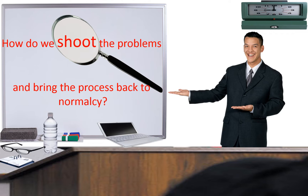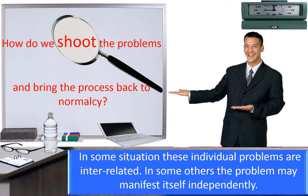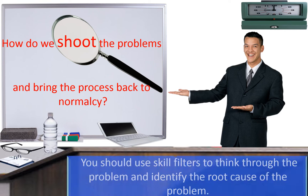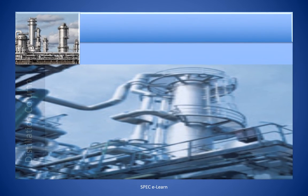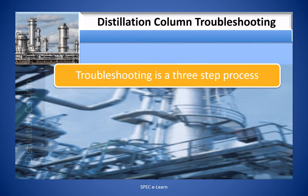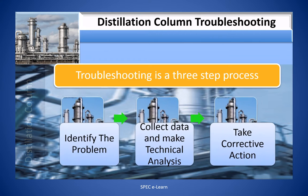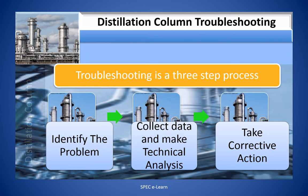How do we troubleshoot the problems and bring the process back to normalcy? In some situations, these individual problems are interrelated; in others, the problems may manifest independently. You should use skill filters to think through the problem and identify the root cause. Troubleshooting is a three-step process: identify the problem, collect data and make technical analysis, and take corrective action.